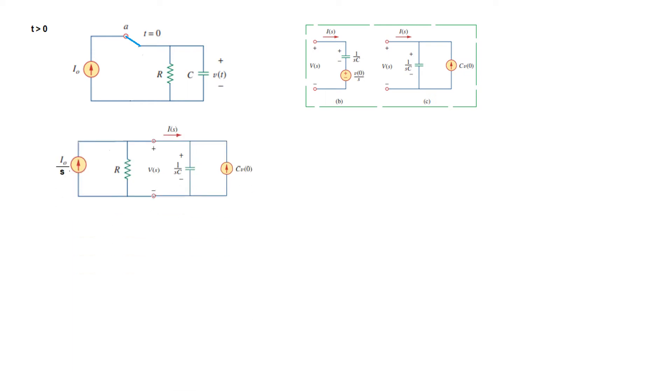In place of capacitor, we use 1 over sC, and the current in S domain becomes I0 over s. We know V0 equals capital V0 from the previous circuit. The current remains same, the capacitor becomes 1 over sC, and this voltage in S domain becomes V(s). Now we will solve this.